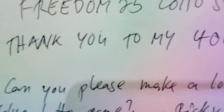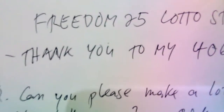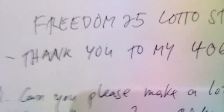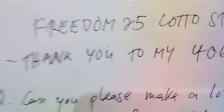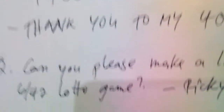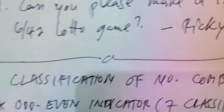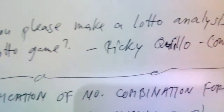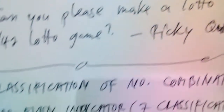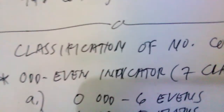Just like any other lotto games we have discussed before, every time we discuss a new lotto game we always start with the classification of number combinations. So we're going to start this discussion with the classification of number combinations for 6/42. I have identified seven classifications of number combinations as an odd/even indicator for 6/42.